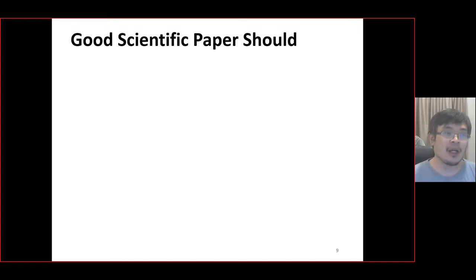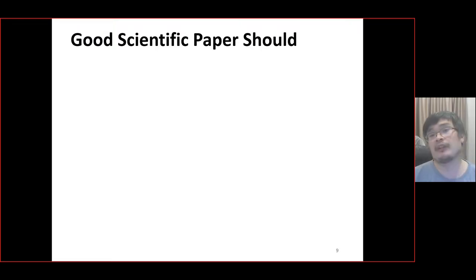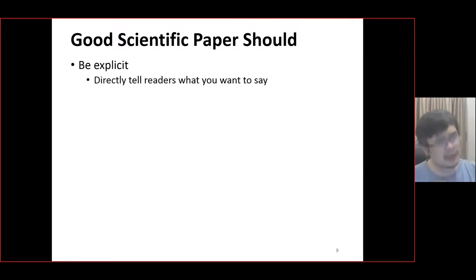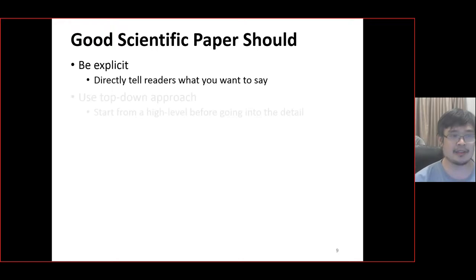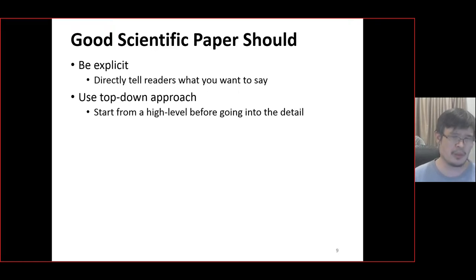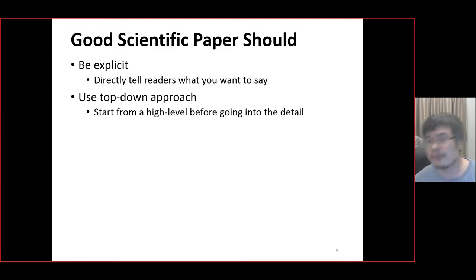Here are things that should be in a good scientific paper — these are my own opinions, but I have a lot of experience writing and reviewing papers, so they're likely useful in general. First: be explicit. If you want to tell the reader something, just tell them directly. This is one of the most key things. Second: pick either a top-down or bottom-up approach depending on your situation. In general, when you explain something complex, a top-down approach works well — you start from a high level before going into the detail of each component, setting out the overall goal before explaining how to achieve it.